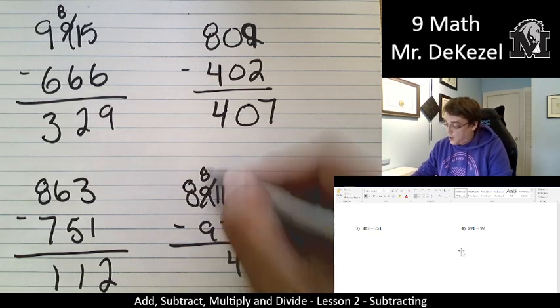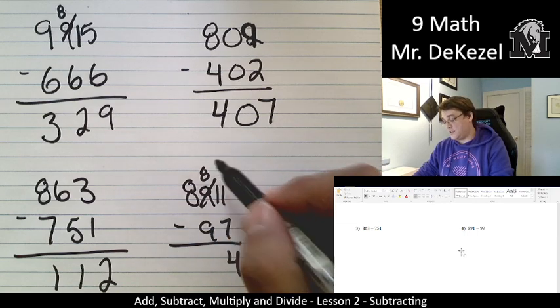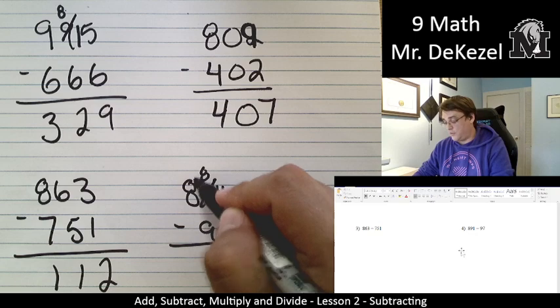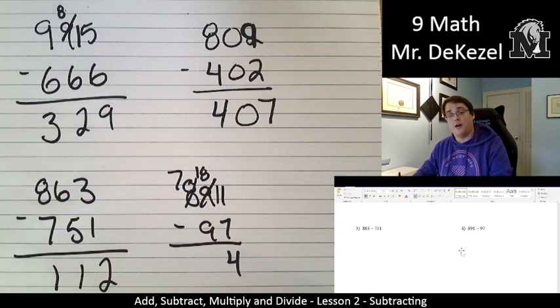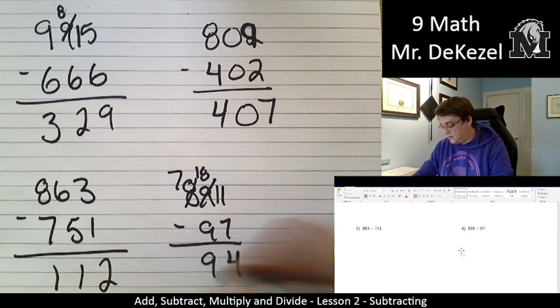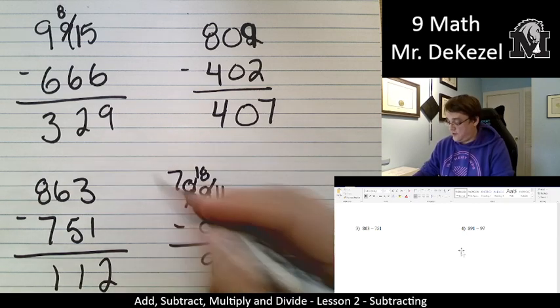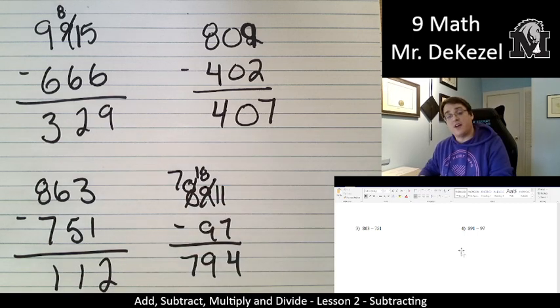We created a problem. We can't do eight minus nine. The top number is smaller than the bottom number. So we're going to borrow again. It becomes seven. We're going to borrow a one here. So that becomes 18. 18 minus nine is nine. And seven minus zero because there's nothing under it is seven. So we get 794 for our answer.